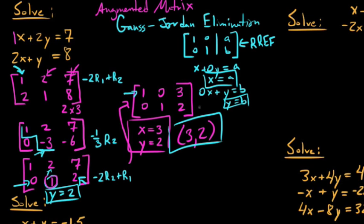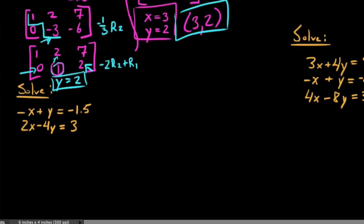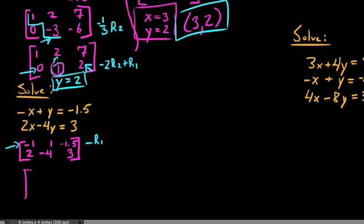Let's try the next few systems, which involve inconsistent and consistent dependent cases. We'll write the augmented matrix corresponding to this second system. We get negative 1, 1, negative 1.5 in the first row and 2, negative 4, 3 in the second row. We need this negative 1 to be a positive 1, so we do negative 1 times row 1, which flips all the signs in the first row.